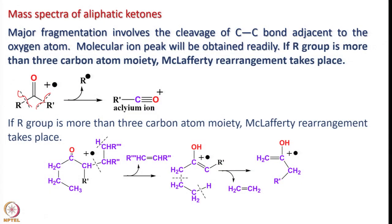The major fragmentation involves the cleavage of the C-C bond adjacent to the oxygen atom. As you can see, these are the possible sites — C-C bond adjacent to the oxygen atom — and molecular ion peaks will be obtained readily in this case. If the R group has more than 3 carbon atoms, a longer chain, then McLafferty rearrangement takes place.